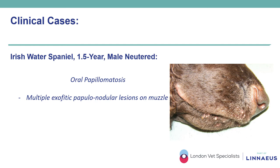Multiple exophytic and papular-nodular lesions affecting the muzzle, including the upper and lower lips, were described in a one-and-a-half-year-old male neutered Irish Water Spaniel with approximately six months duration. Clinical signs and age at onset were suggestive of oral papillomatosis, which was further confirmed on histopathological examination. Oral papillomatosis is caused by papillomavirus infections, affecting the lips, oral cavity, and sometimes the tongue, palate and epiglottis. This condition is seen in young dogs and starts normally with a soft, smooth, plaque-like lesion which can evolve into a cauliflower-like lesion. Typically there is spontaneous regression after a few weeks.